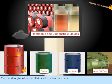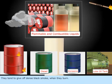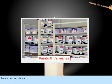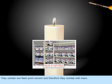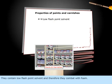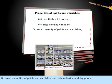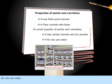Combustible liquids tend to give off a dense black smoke when they burn. Paints and varnishes contain low flashpoint solvent and therefore they are combated with foam. On small quantities of paints and varnishes, use carbon dioxide and dry powder. Do not use water.